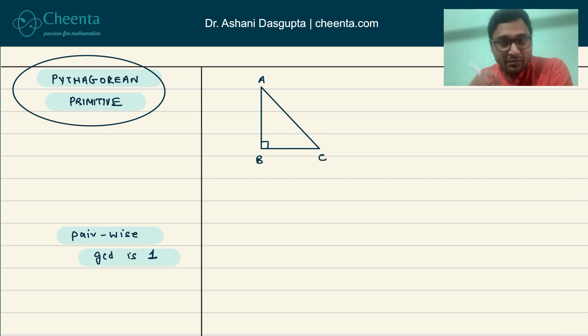First, a quick reminder of what the Pythagorean theorem was. If we have a right angle triangle ABC, then one can show using tools in geometry that AB² + BC² = AC².